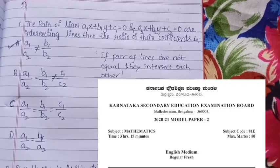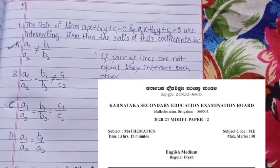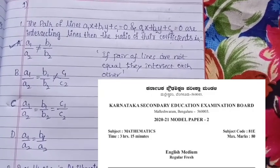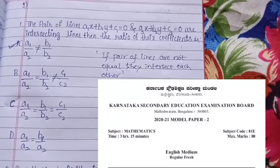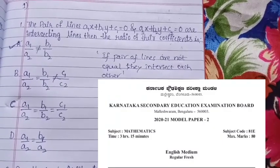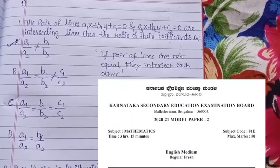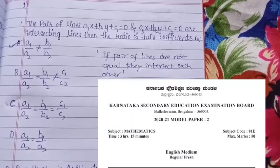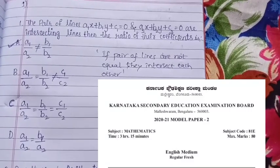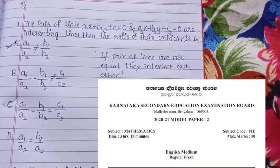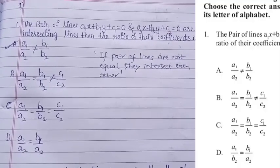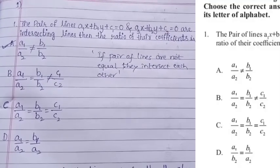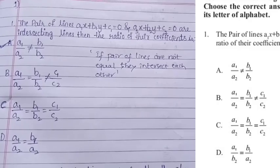Dear students, welcome to our Ajo Allrounder channel. Today we are going to solve your maths question paper. This is model question paper number 2 released by Karnataka board. First question, we can see the question paper also.